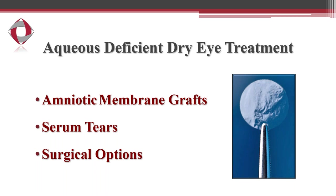Serum tears work really well with virtually no side effects. We draw your own blood, centrifuge it, separate the red and white blood cells, and isolate the blood serum, which is full of important growth factors and antibodies. This is very helpful in controlling inflammation and promoting healing. For the most severe cases, we do have some surgical options available. These typically aren't necessary unless the patient has nerve damage and decreased corneal sensation, and we reserve this for the most severe cases.